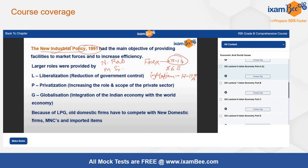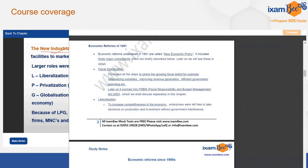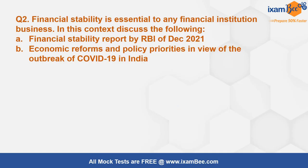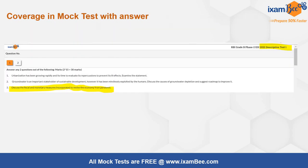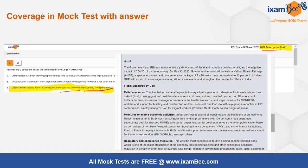This is an important topic, and course coverage was also available in the form of recorded videos and notes. Moving to the next question: it had two parts related to financial stability and its importance in the economy. One part required discussing the RBI Financial Stability Report of December 2021, and the second was about economic reforms and policy priorities taken because of COVID-19 in India. A similar question was discussed in our first descriptive mock test — about fiscal and monetary measures to revive the economy from the pandemic.